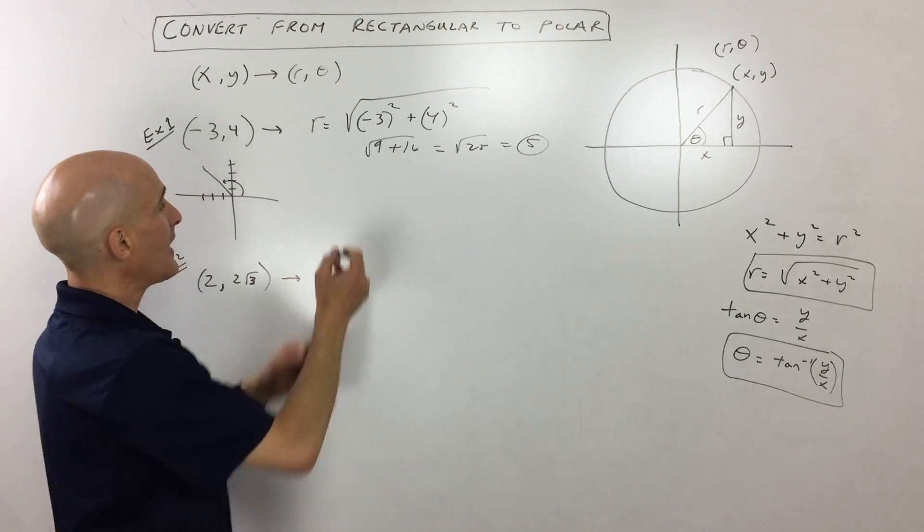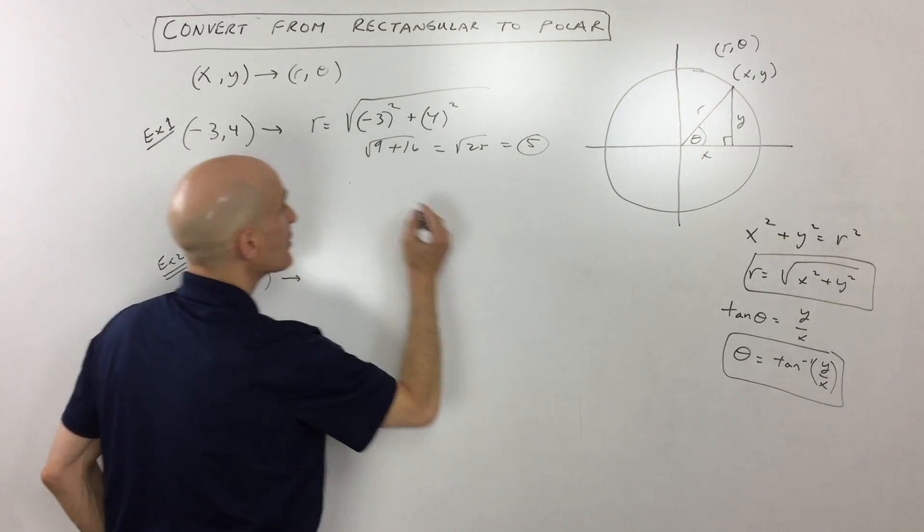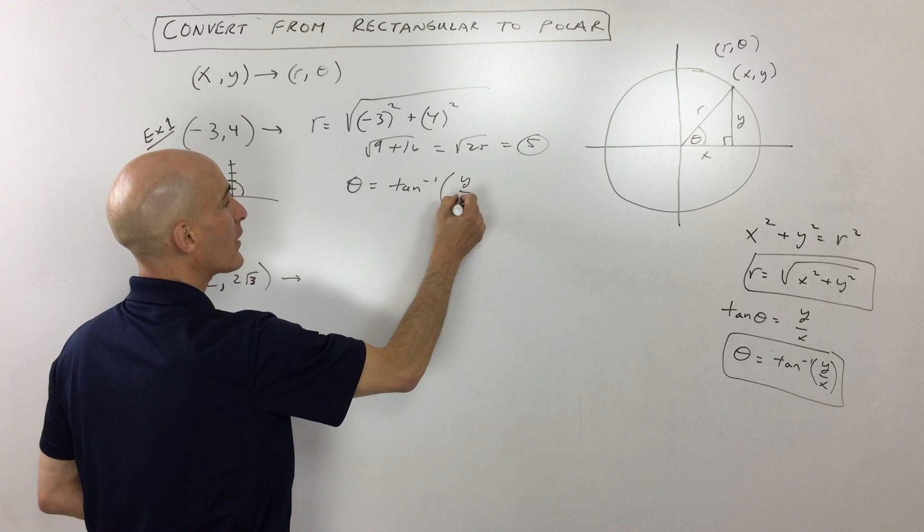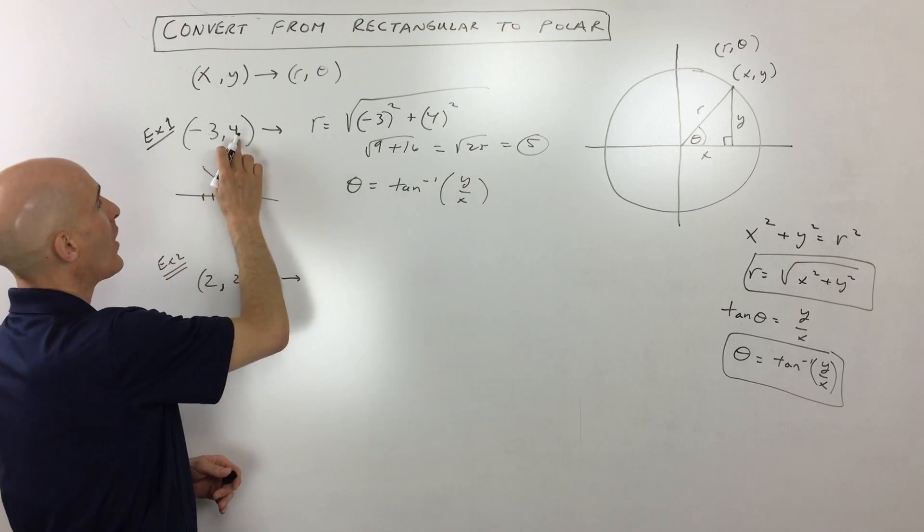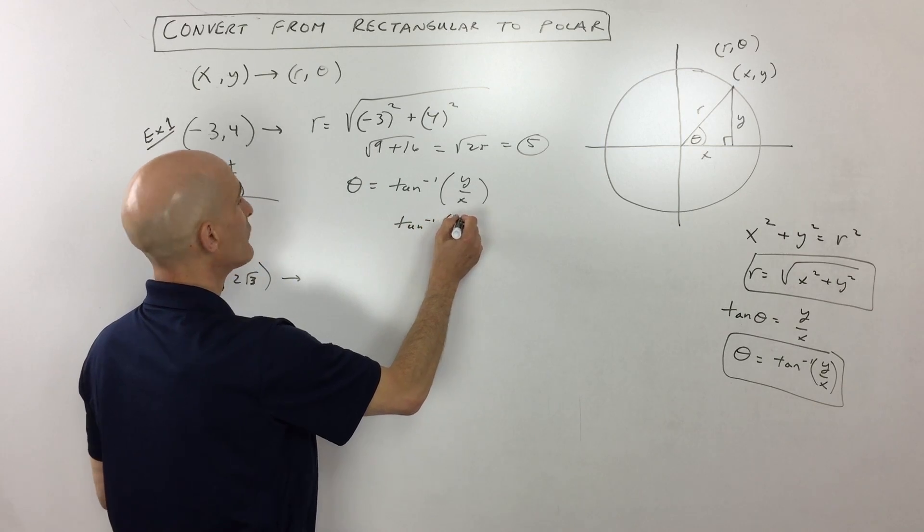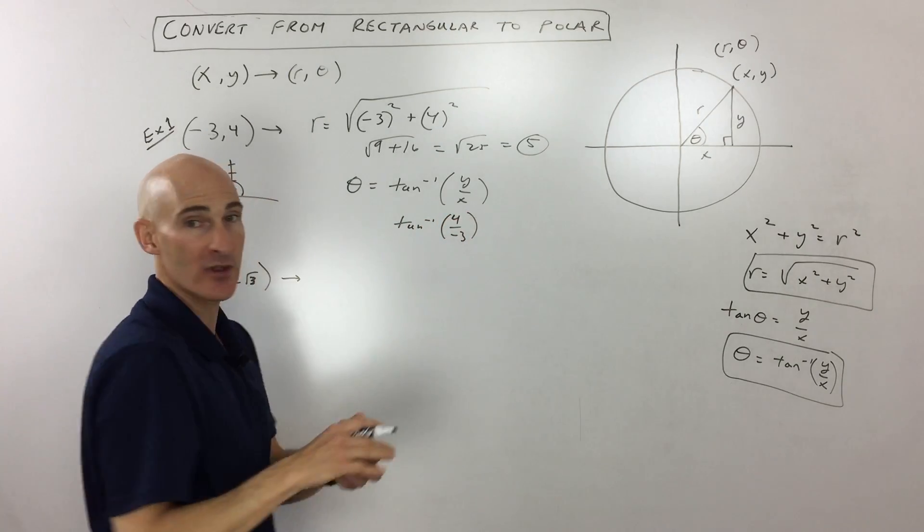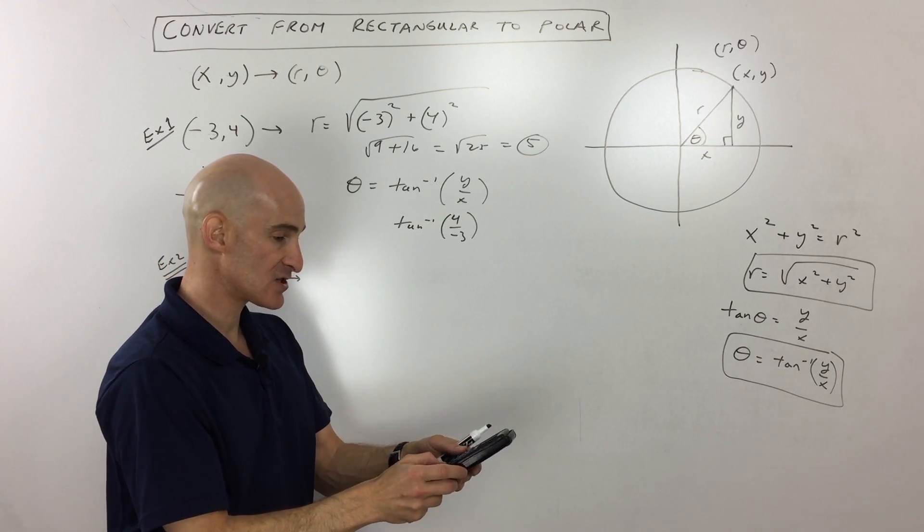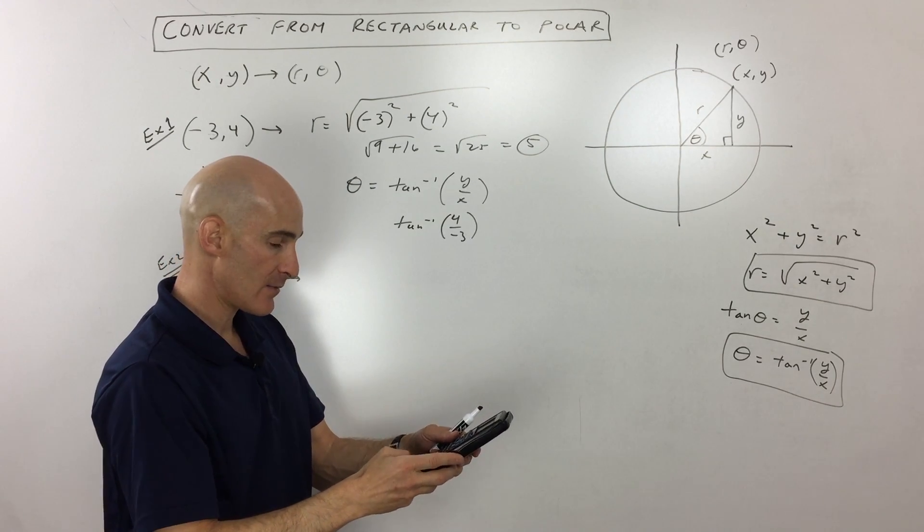Now we want to find the angle. We're going to be using this formula over here. Theta is equal to the tangent inverse of y over x. In this case, y is 4 and x is negative 3. So we're doing the tangent inverse of 4 over negative 3. Let me go to the calculator on this one. We've got tangent inverse of 4 divided by negative 3.